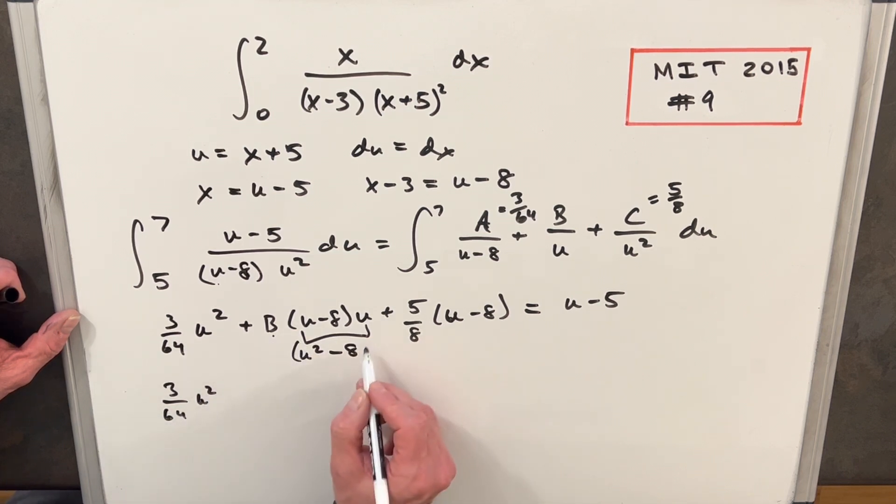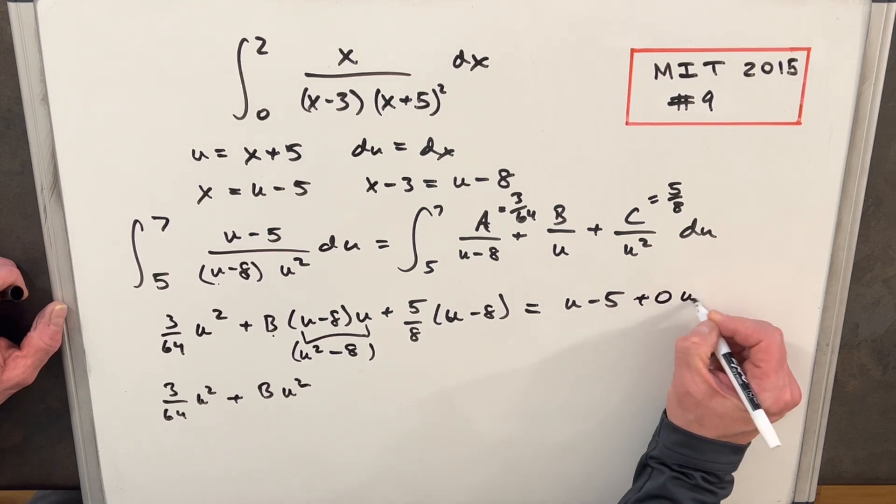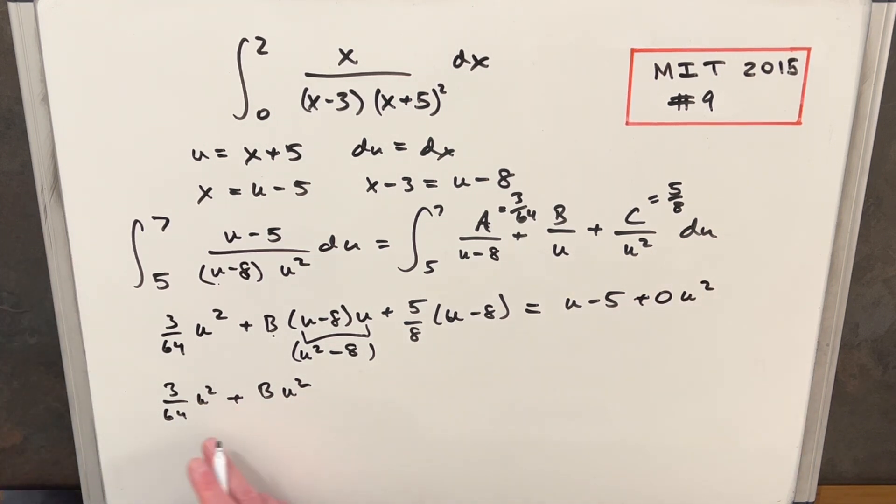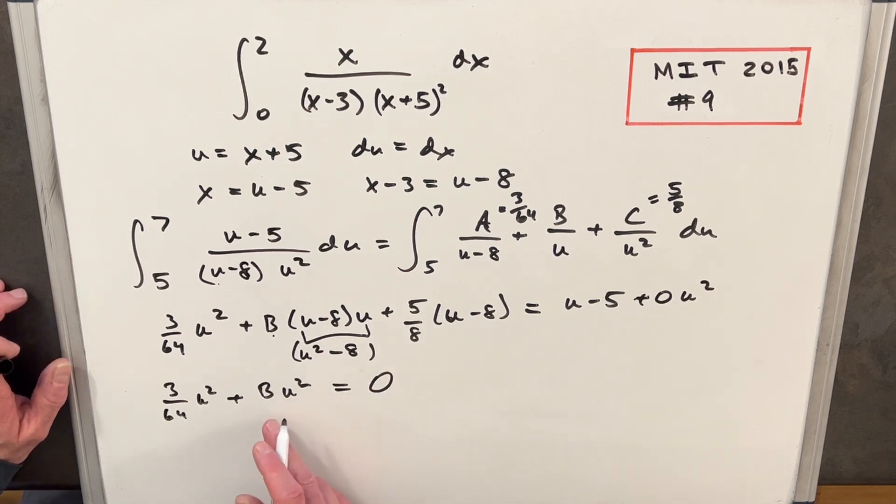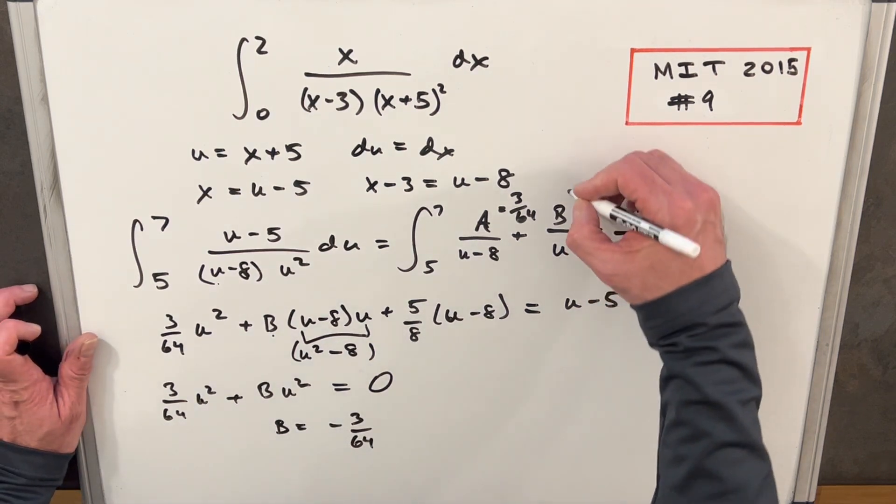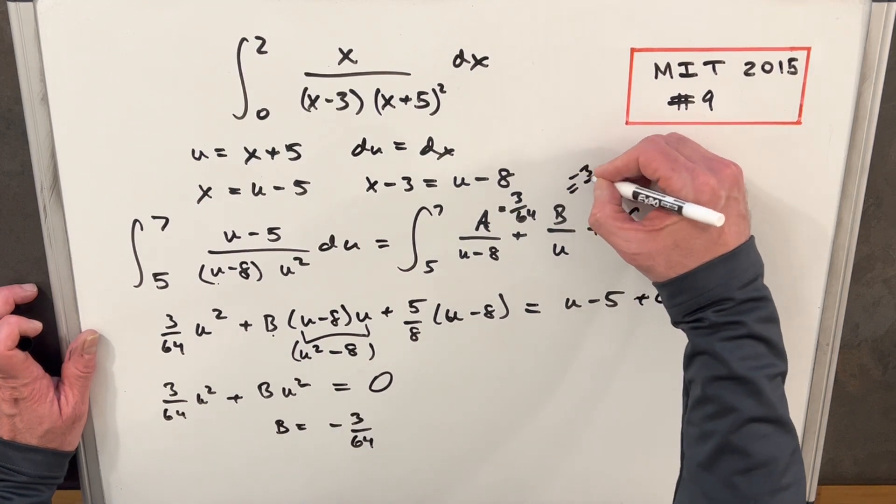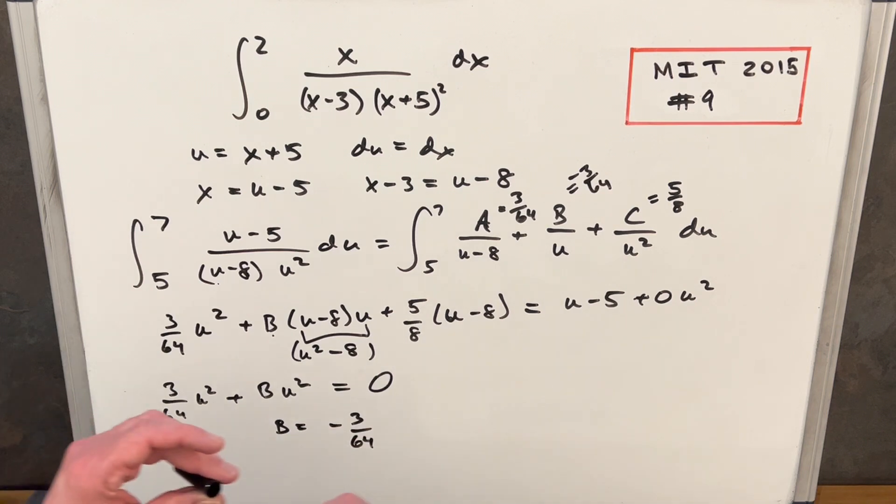Now, over here, we've got no u squared, right? We could write it like zero u squared. So this thing all has to be equal to zero, because there is no u squared. So for this to be zero, B has to be minus three over 64. And so now we have that. We have minus three over 64. And we don't need the rest of this equation, because we've found our A, B, and C value.